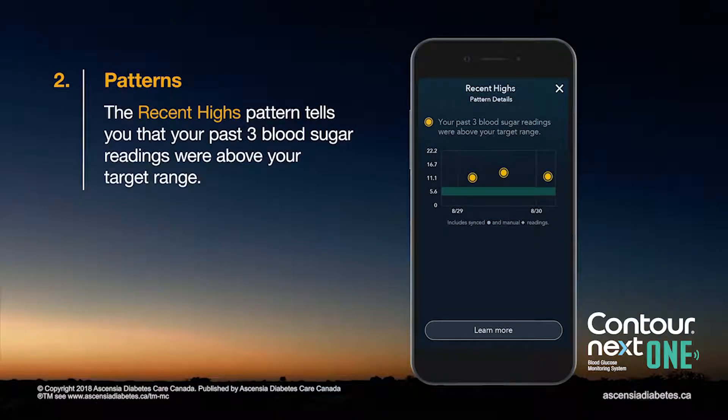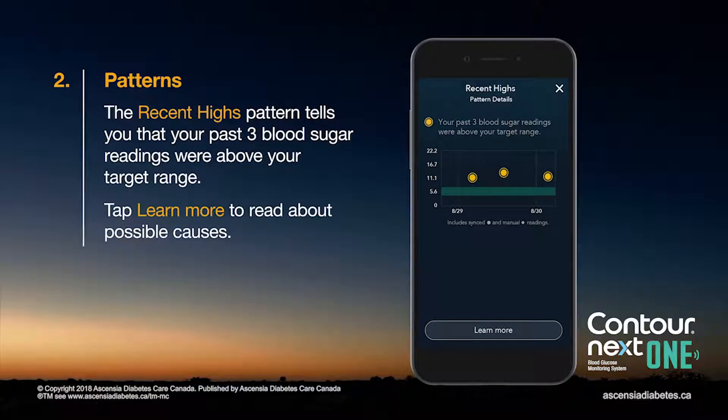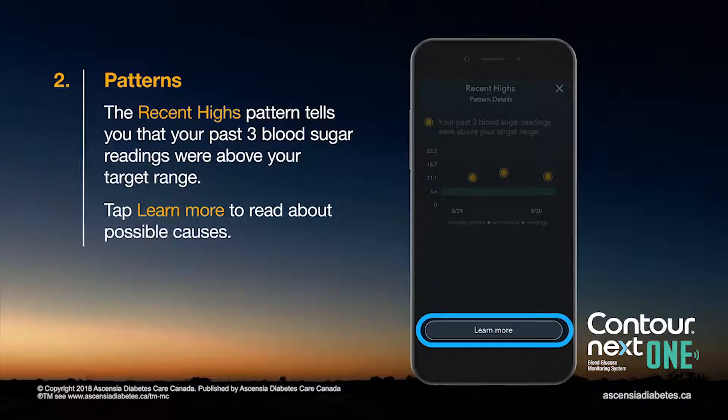The Recent Highs pattern tells you that your past three blood sugar readings were above your target range. Tap Learn More to read about possible causes.